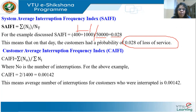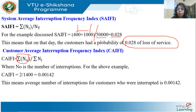The Customer Average Interruption Frequency Index (CAIFI) is the number of interruptions NI divided by the number of affected customers. For the above example, there were two interruptions affecting 1,400 customers totally, so it is 0.00142 — meaning around 0.1% of the customers were affected. These four indices — SAIDI, CAIDI, SAIFI, and CAIFI — are very commonly used in reliability for distribution systems.